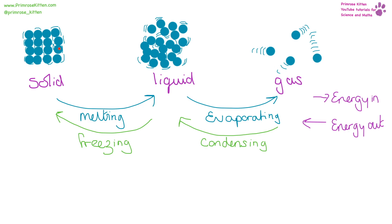Solids have a very fixed structure — atoms may wiggle a little but are around a fixed point; there is some vibration but no flow, and they can't be compressed. Liquids have much more movement and are not in a fixed position; they can flow but can't be compressed. Gases are very free to move, not around a fixed position; they can flow and they can be compressed. Going from solid to liquid is melting; from liquid to gas is evaporating — these require energy input. Going the other way: gas to liquid is condensing, liquid to solid is freezing — energy comes out.